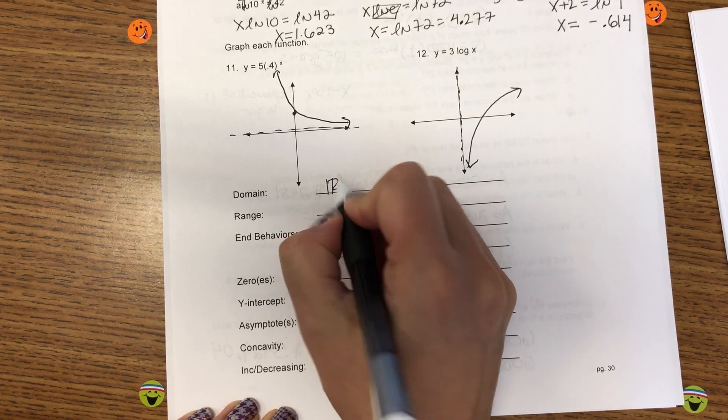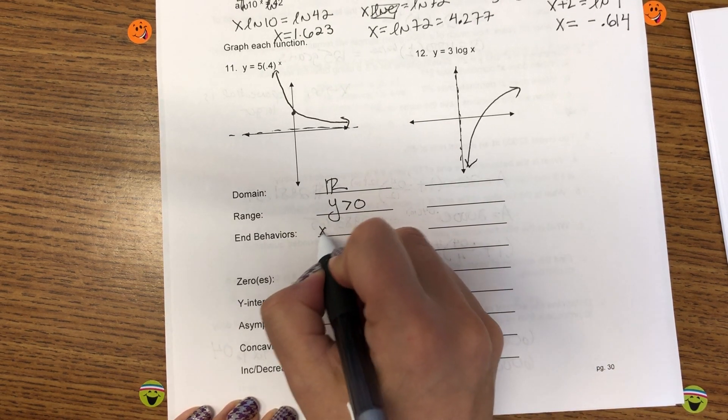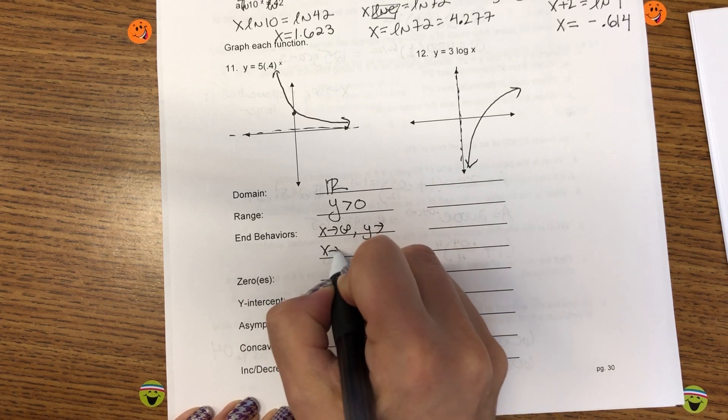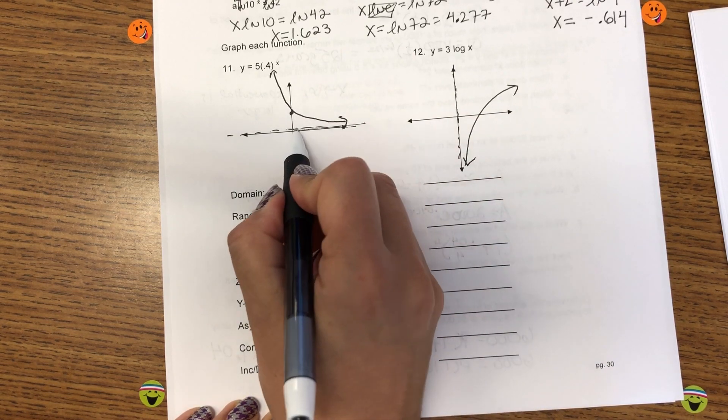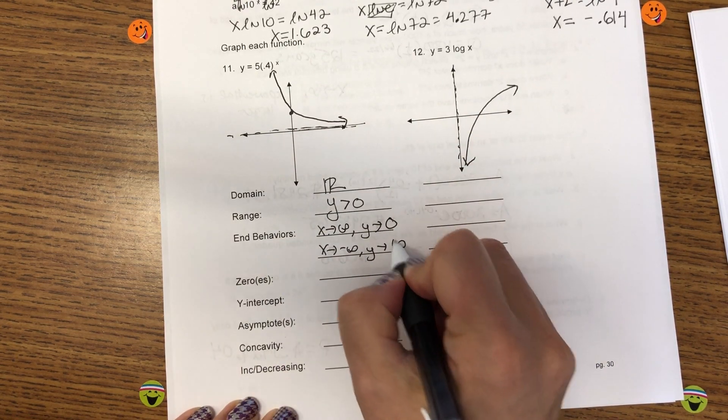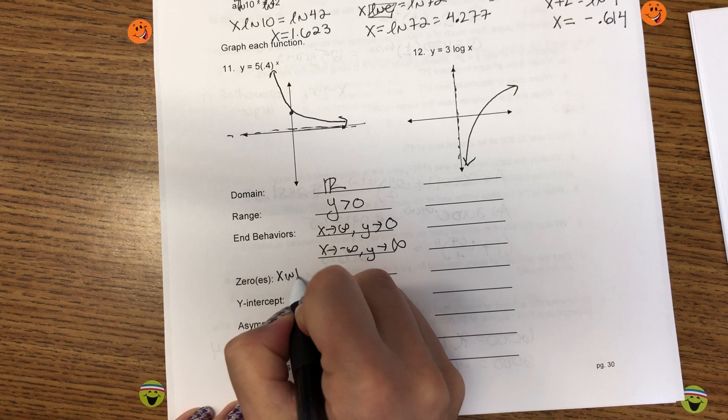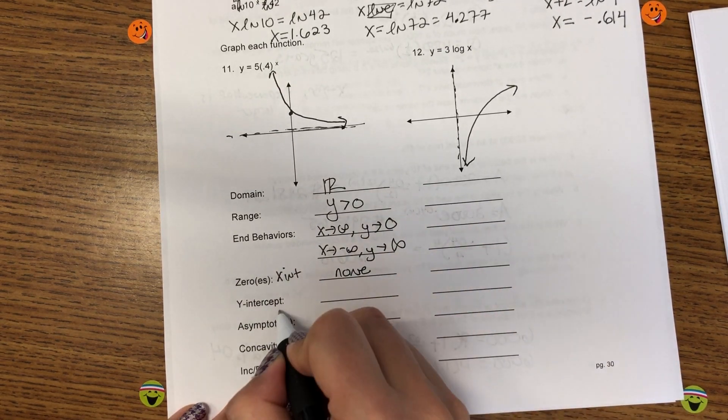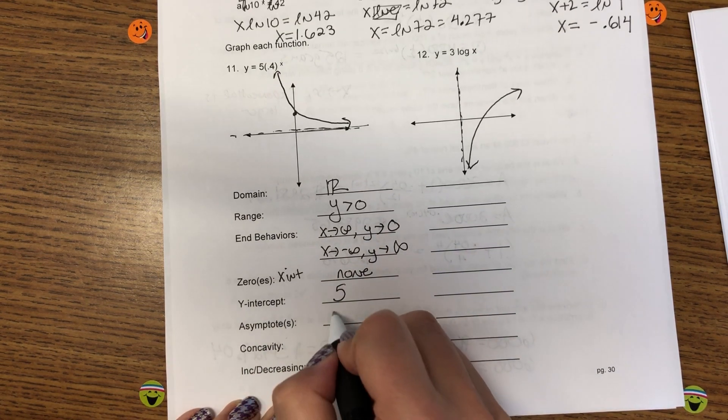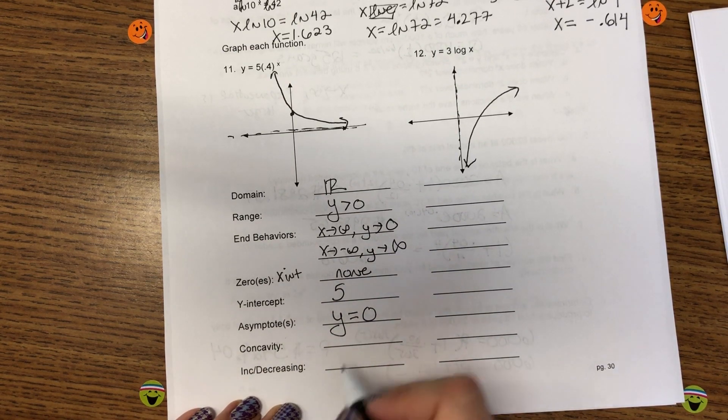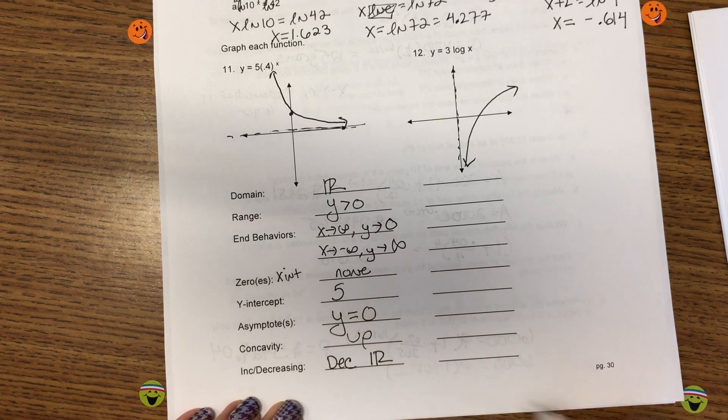And then, for our properties, the domain of an exponential is all reals. This exponential has a range of y is greater than 0. For end behavior, you have to do both left and right. As x goes to infinity, y is approaching 0. As x goes to negative infinity, y is going to infinity. The zeros is technically an x-intercept. So, this one has none. The y-intercept is 5.